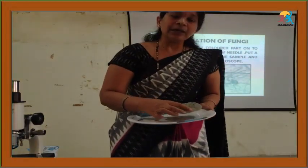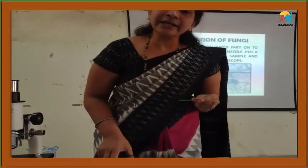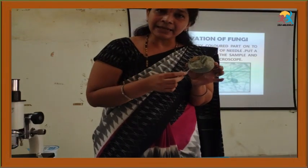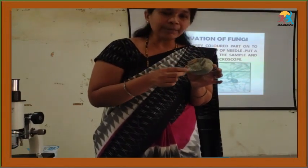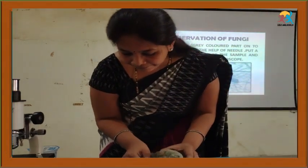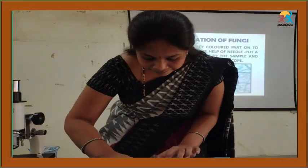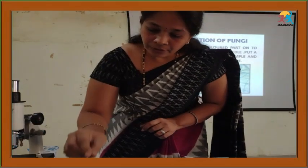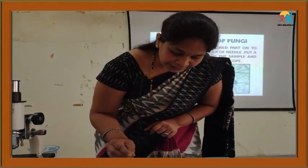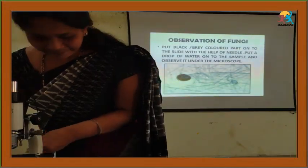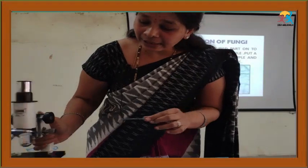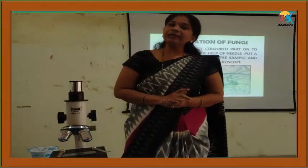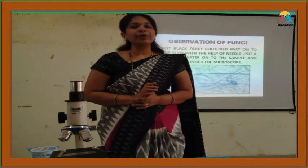Take a spoiled bread and a sterilized slide. Take the dark-colored or gray-colored spoiled part of the bread onto the slide. Add one or two drops of water on the sample and observe it under the microscope. Children, draw the diagrams of those organisms you observed under the microscope.